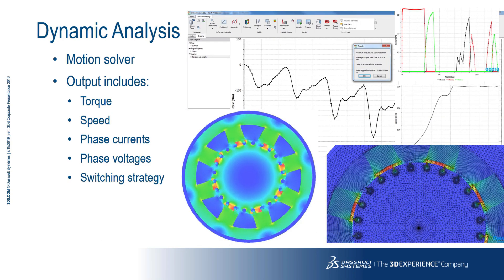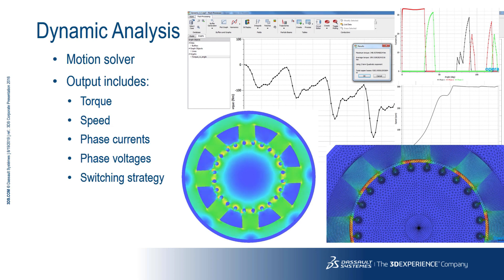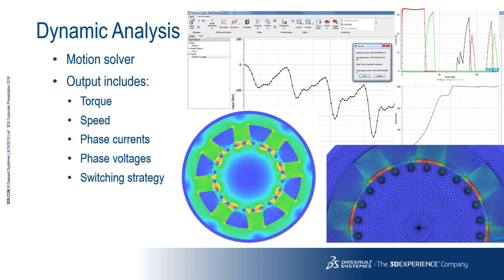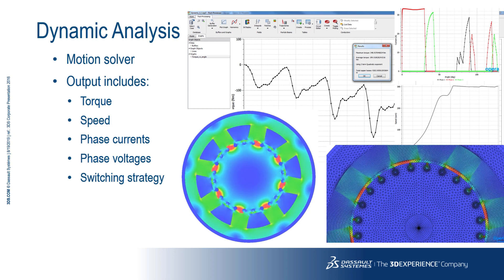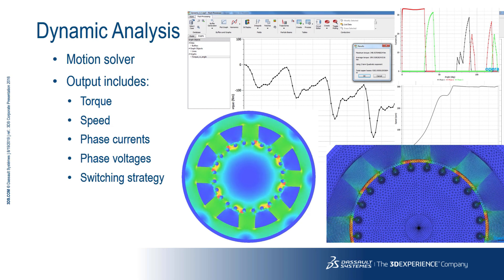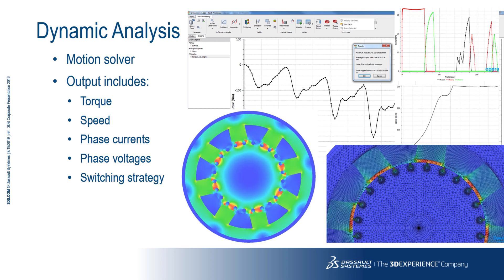The dynamic analysis option uses the mechanically coupled option of the motion analysis solver. Based on the geometry of the machine and the number of phases selected, the switching strategy is calculated. The post-processing step includes the output of torque, speed, phase currents, phase voltages and switching strategy.